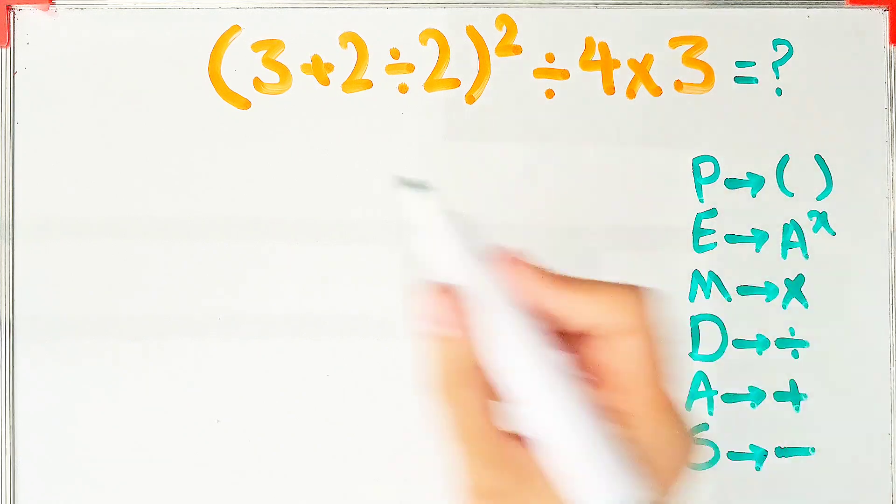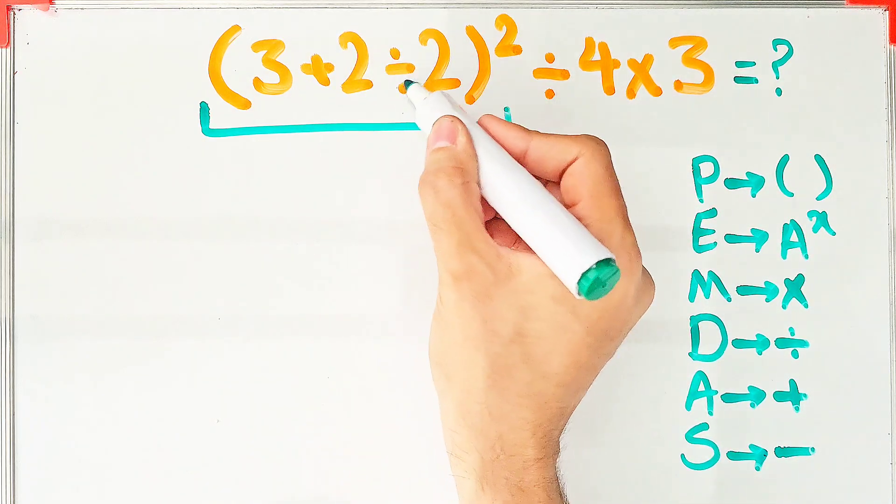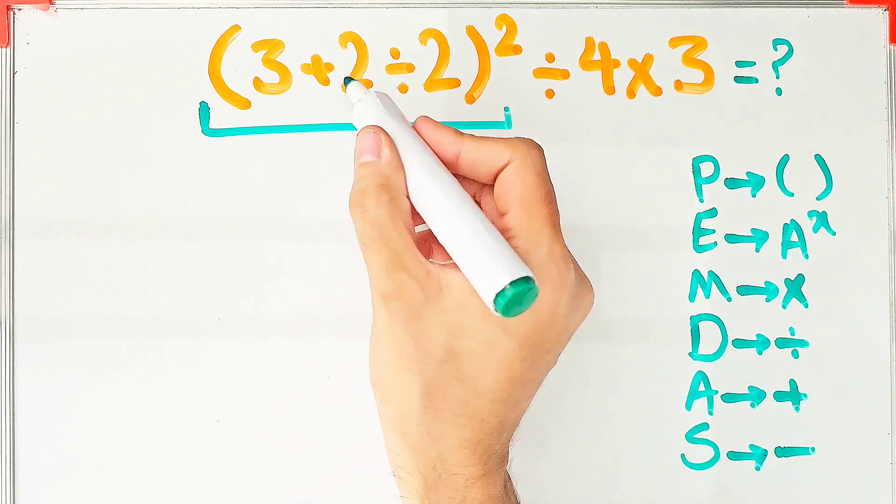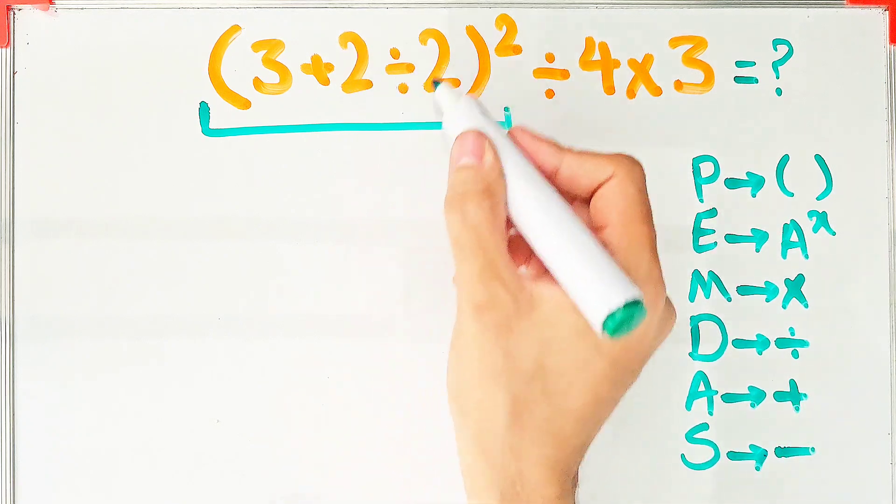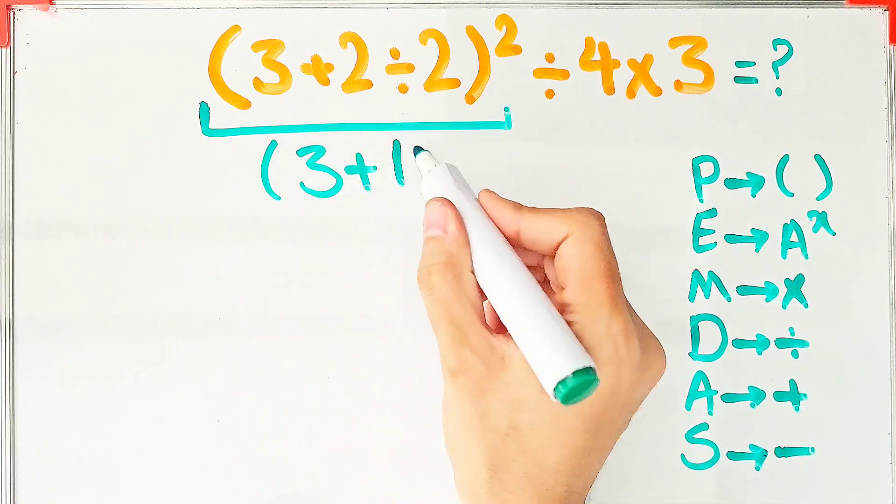Inside the parentheses, we have addition and division. First we do division because division has the higher priority over addition. 2 divided by 2 equals 1. Now we have 3 plus 1 to the power of 2 divided by 4 then times 3. In this step, again we simplify the parentheses: 3 plus 1 equals 4.